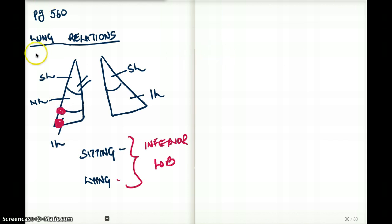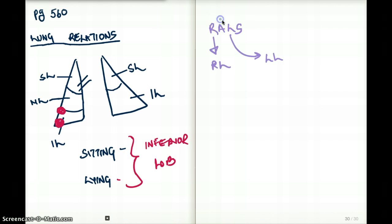The other thing that is mentioned under lung relations is that there is a nice mnemonic called RALS. R is for the right lung and L is for the left lung. And A stands for anterior and S stands for superior.